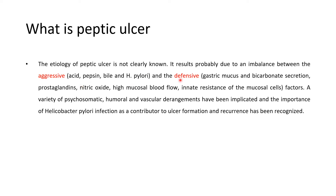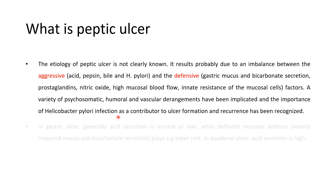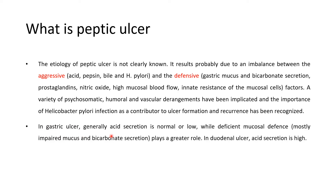When there is an imbalance between these two factors, it will lead to peptic ulcer. A variety of psychosomatic, humoral, and vascular derangements have been implicated, and the importance of H. pylori infection as a contributor to ulcer formation and recurrence has been recognized. In gastric ulcer, acid secretion is normal or low while mucosal defense is mostly impaired — mucus and bicarbonate secretion play a greater role — whereas in duodenal ulcer, the acid secretion is high.